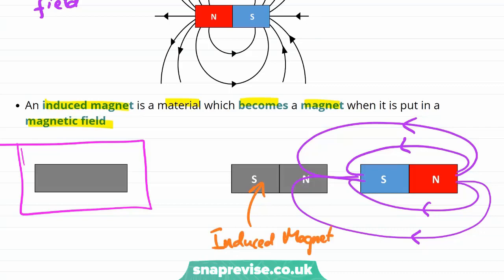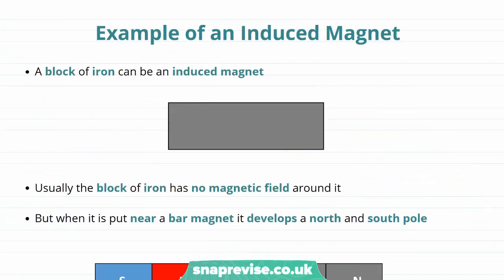Because its magnetism is being induced by another magnetic field. Now a good example of an induced magnet would be a normal block of iron. So here is our standard block of iron. And this block is currently totally normal. This block has no magnetic field around it.